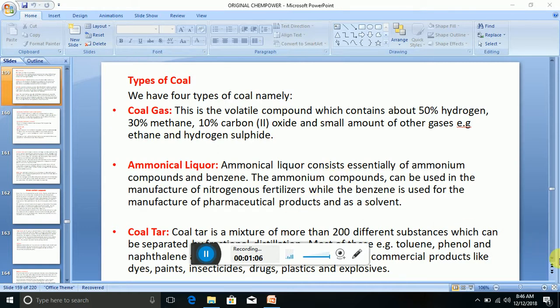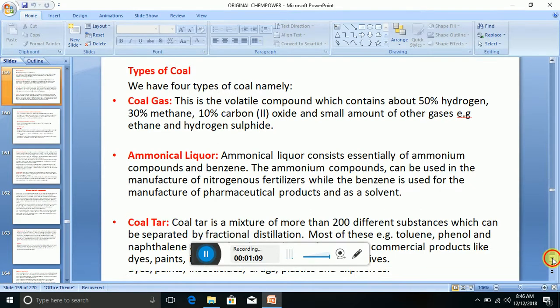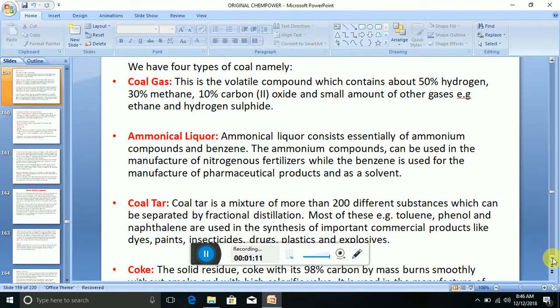Now the third type of coal is coal-tar. Coal-tar is a mixture of more than 200 different substances which can be separated by fractional distillation. Most of these include toluene, phenol, and naphthalene, and are used in the synthesis of important commercial products like dyes, paints, insecticides, drugs, plastics, and explosives.